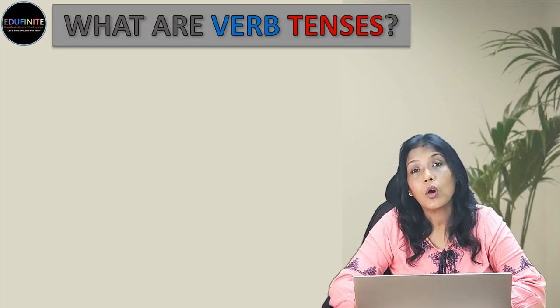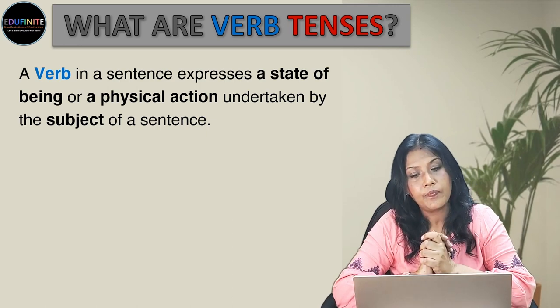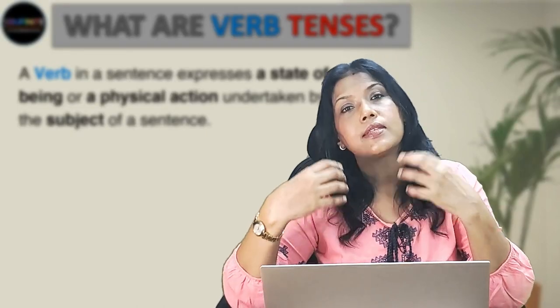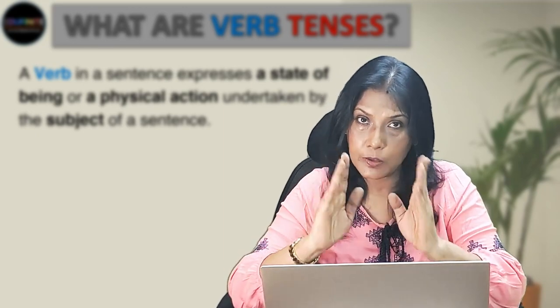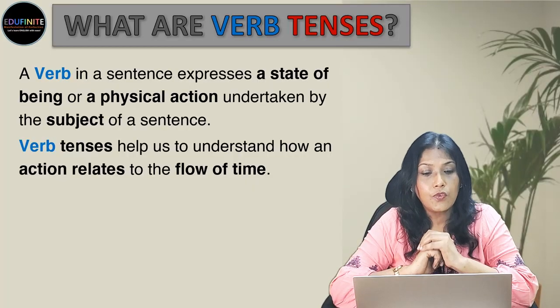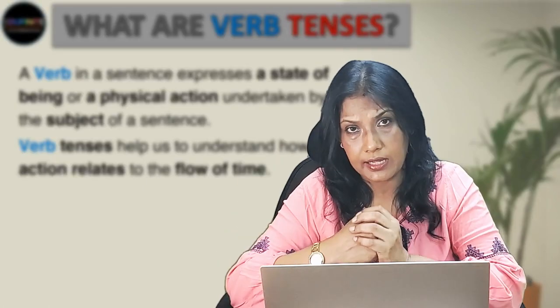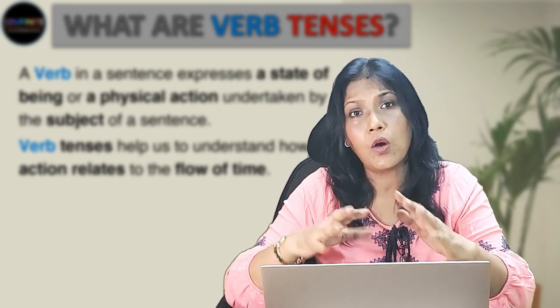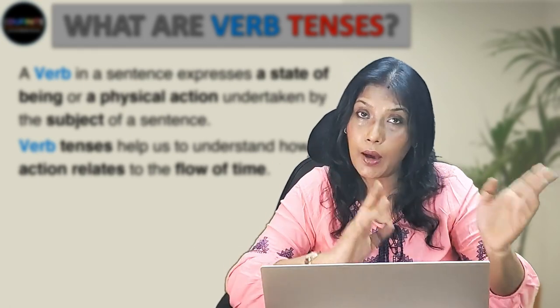Today, a topic of discussion is present perfect tense versus past tense. But before we delve into the topic, let's do a quick revision on what are verb tenses. A verb in a sentence expresses a state of being or physical action undertaken by the subject of a sentence. Verb tenses help us to understand how an action relates to the flow of time — that means when that action has taken place, whether it has taken place some time back, is taking place now, or will take place some time later.